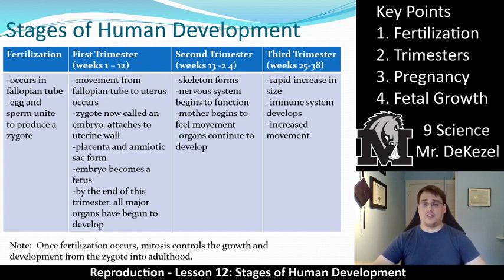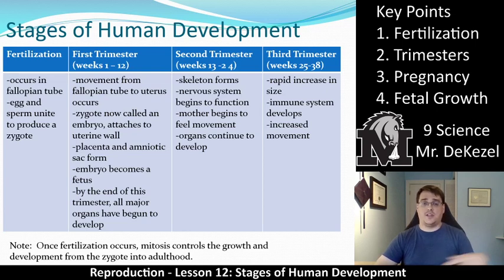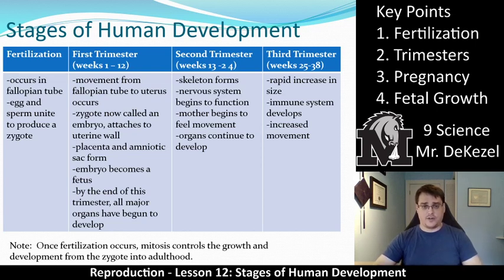In the third trimester, there is a rapid increase in the size of the fetus. The immune system develops, giving it some immunity against foreign invaders, and movement increases even more. You're growing larger and larger throughout these three trimesters. There are more detailed things that happen week by week, which will be covered further, but that's a good overall view of what goes on.